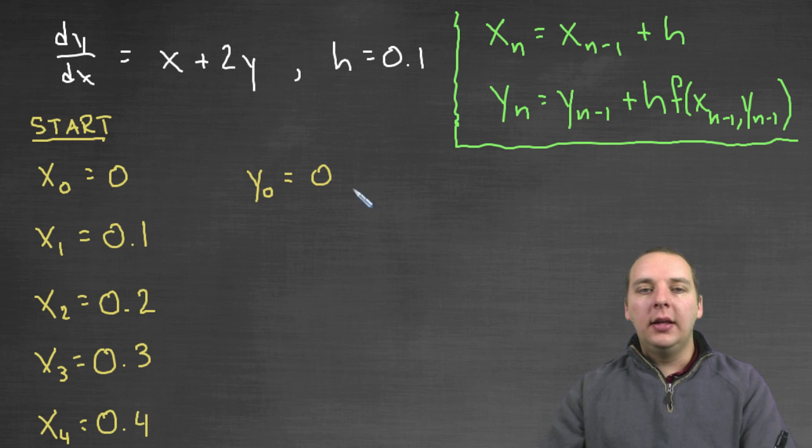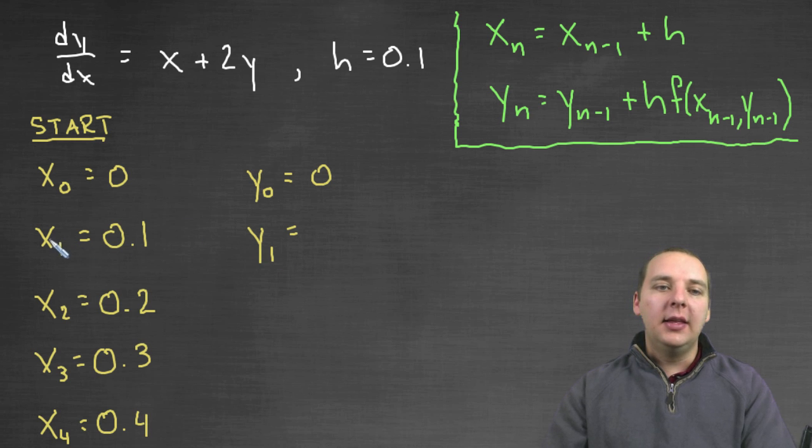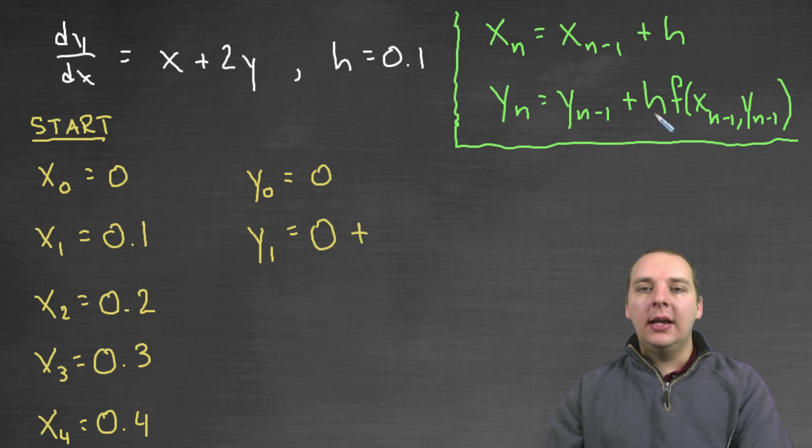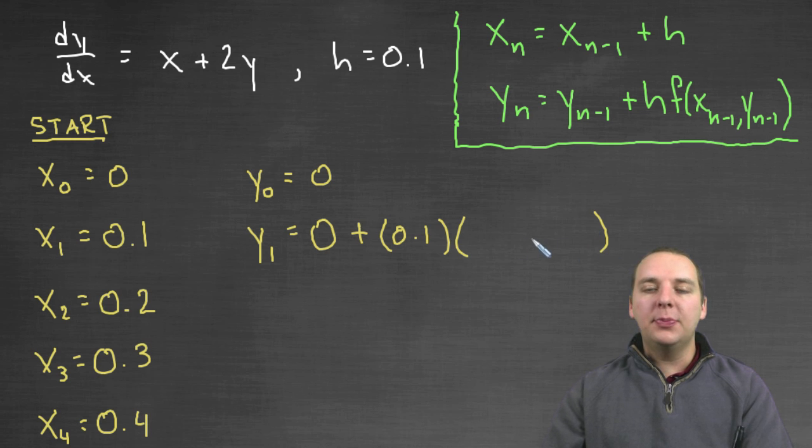So let's start by finding y sub 1. This is the y coordinate that matches x sub 1. So I'm going to use my formula here. For y sub 1, we'll take the previous y value, that's y sub n minus 1, which in this case is 0. And we'll add the step size, which for all of these is always going to be 0.1. So we'll have 0.1 times, and this is the trickiest part.